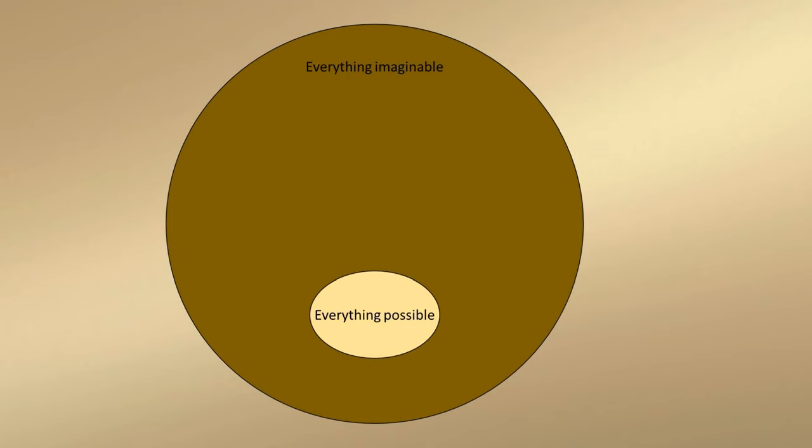I would like to point out that this would imply that everything happens. While I would say that only everything that can possibly happen along the branches of the event tree happens. Everything possible is a lot, but a lot less than everything.